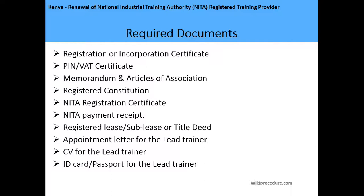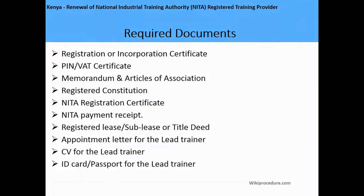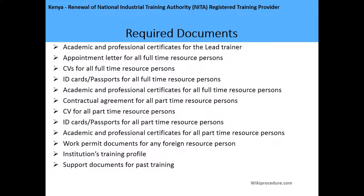You need your National Industrial Training Authority payment receipt of 10,000 shillings for the renewal, your registered lease, sub-lease, or title deed of the property or premises where you are carrying out the training, your appointment letter for the lead trainer, a CV, and an ID card or passport for the lead trainer. You also need academic and professional certificates for the lead trainer.